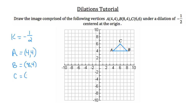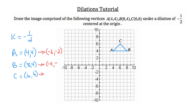We have a dilation of negative one-half, so we multiply each coordinate by negative one-half. The x-coordinate of A: 4 times negative one-half equals negative two; the y-coordinate: 4 times negative one-half equals negative two. For B: 8 times negative one-half equals negative four; 4 times negative one-half equals negative two. For C: 6 times negative one-half equals negative three; 6 times negative one-half equals negative three.